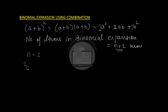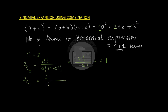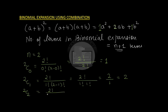Now let us find 2C0. We know the combination formula: 2C0 = 2! / (0! × (2−0)!) = 2! / 2! = 1. Then 2C1 = 2! / (1! × 1!) = 2/1 = 2. And similarly 2C2 = 2! / (2! × 0!) = 2! / 2! = 1.